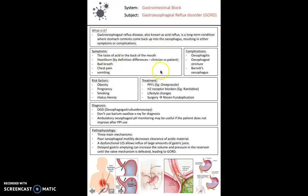As a result of gastroesophageal reflux, it can lead to esophagitis, esophageal stricture, and Barrett's esophagus. You can treat this with PPIs such as omeprazole, H2 receptor blockers, lifestyle changes, and possibly surgery if severe. The main method of diagnosis is through an OGD — not a barium swallow X-ray. An alternative is ambulatory esophageal pH monitoring, where a probe monitors pH over a 24-hour period, useful if the patient doesn't improve after PPIs.